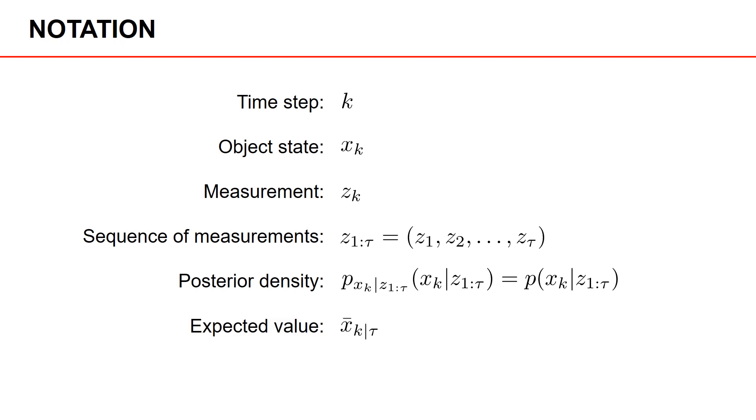The expected value of state x at time k, given measurements up to time tau, is denoted by x bar, with the sub-indexing k given tau. Lastly, if the pdf p is a Gaussian pdf, we denote the Gaussian pdf with a calligraphic N, and we have the mean value x bar and the covariance matrix P, both with sub-indexing k given tau.